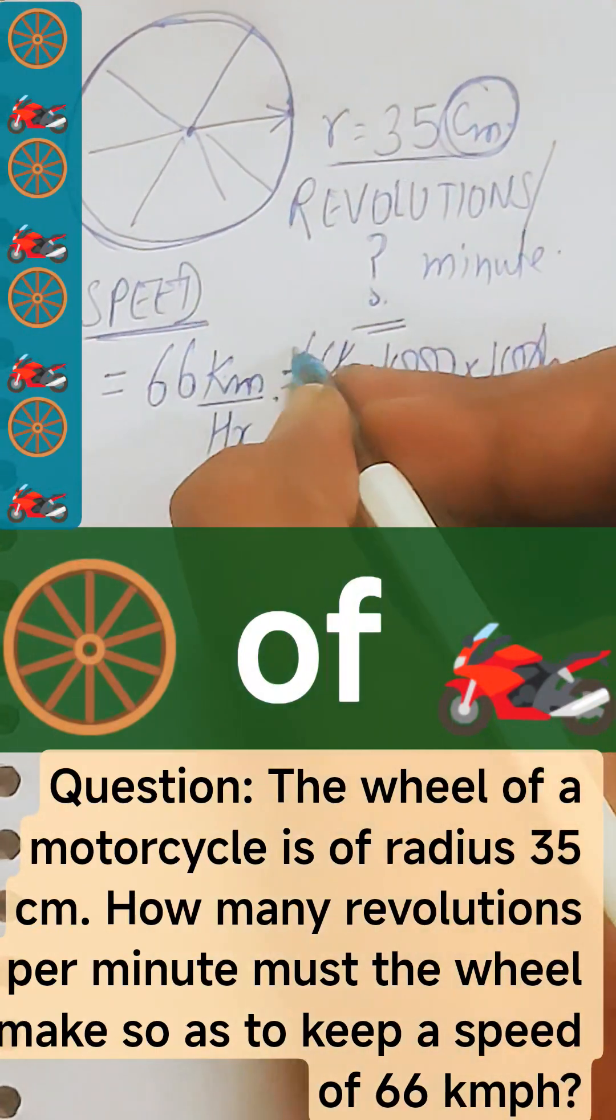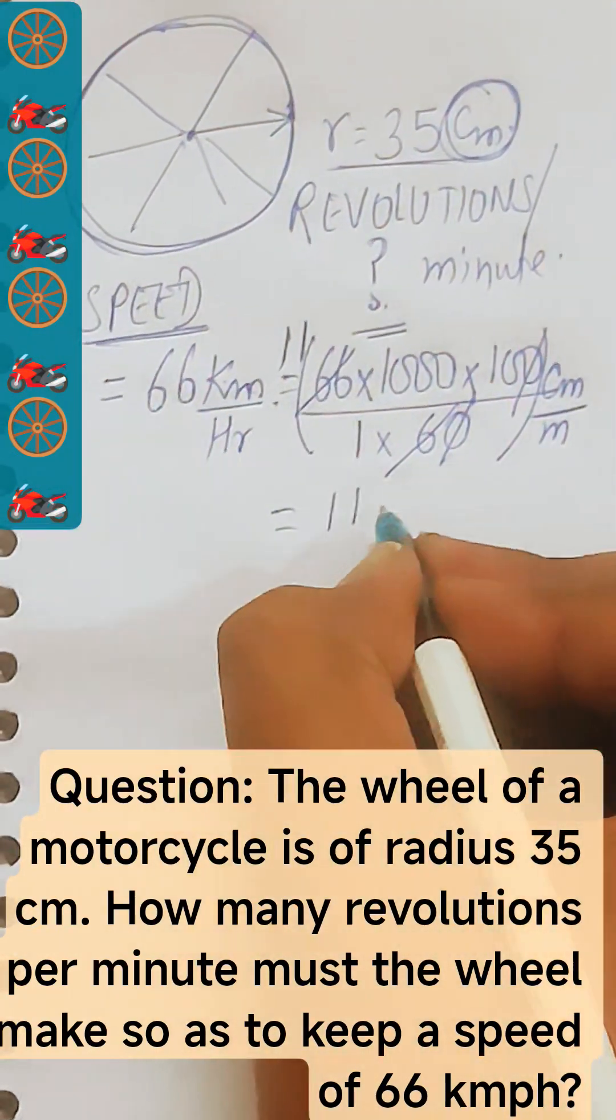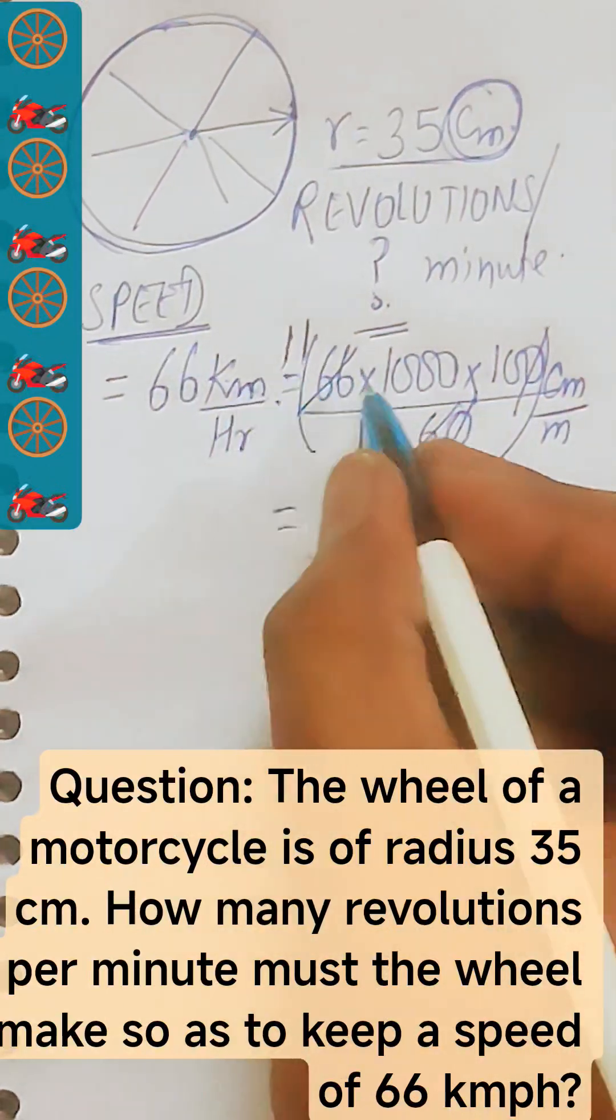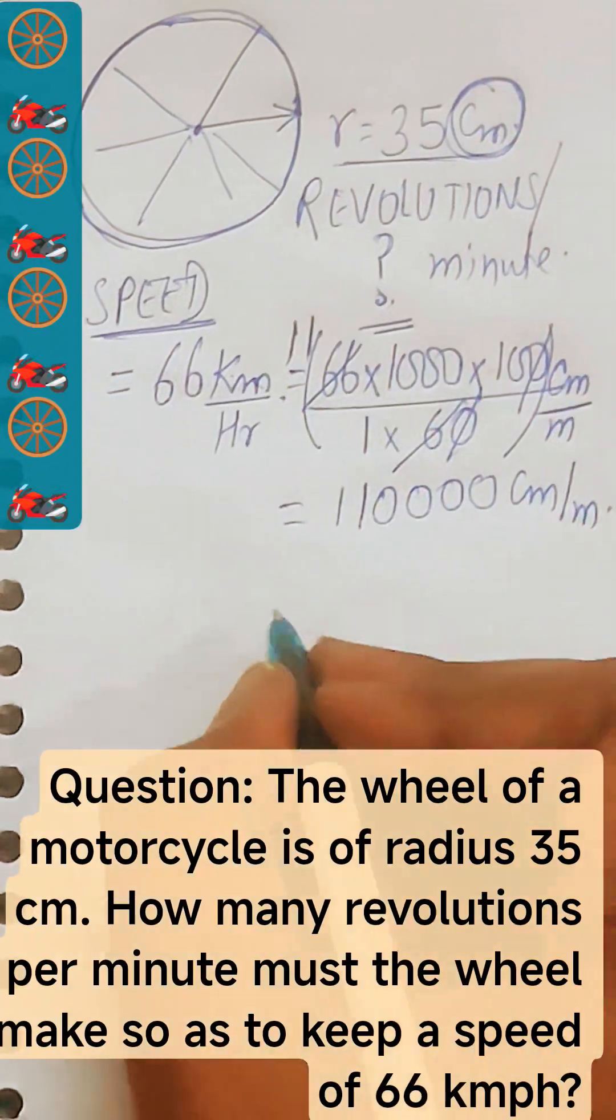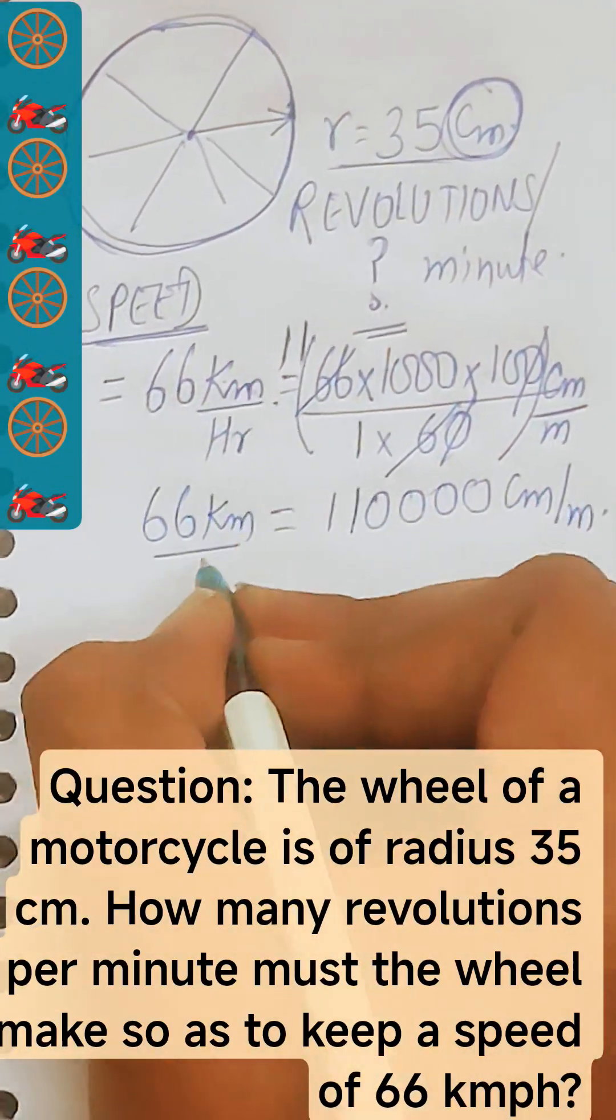Zero-zero will be cancelled out and 6 will divide 66 in 11 times. So this will give you 110,000 centimeter per minute will be the speed instead of 66 kilometer per hour.